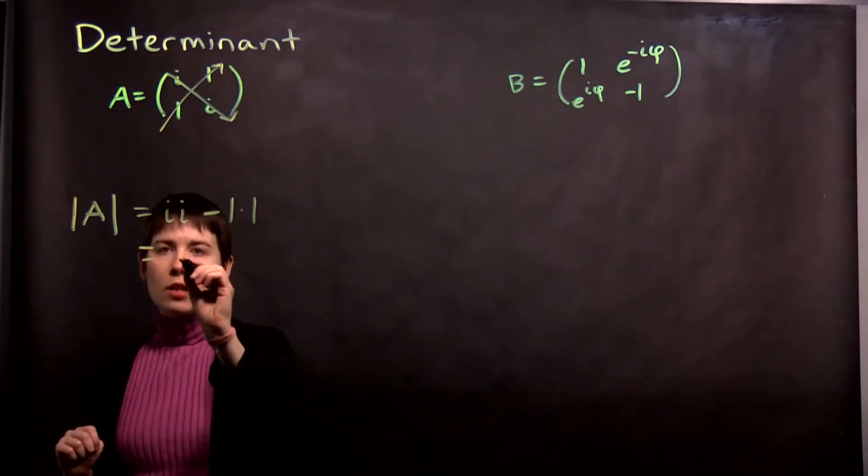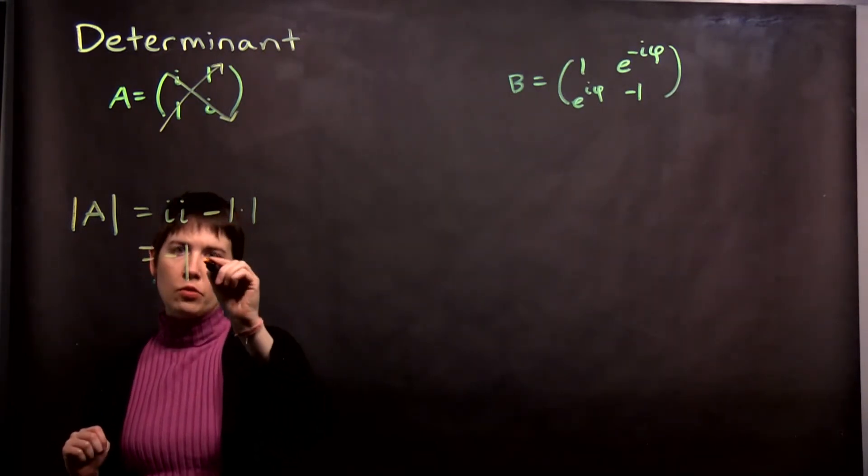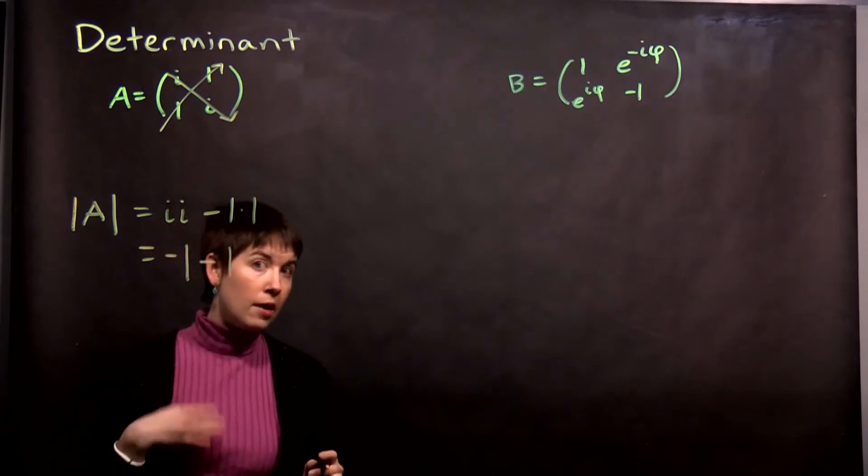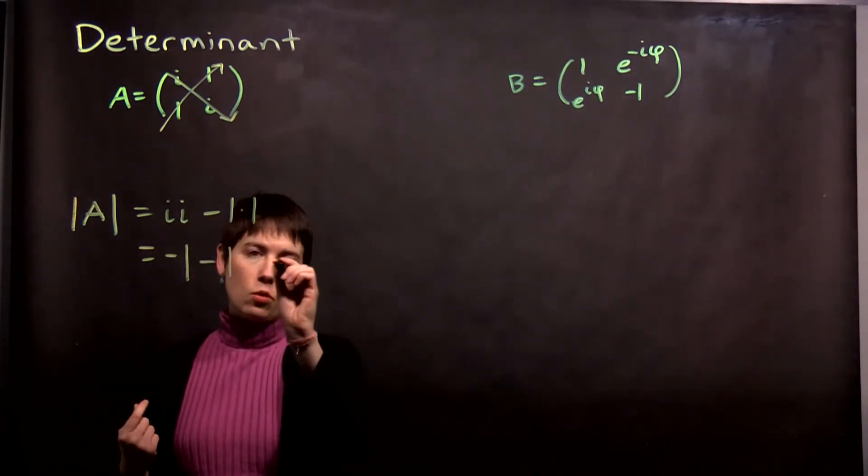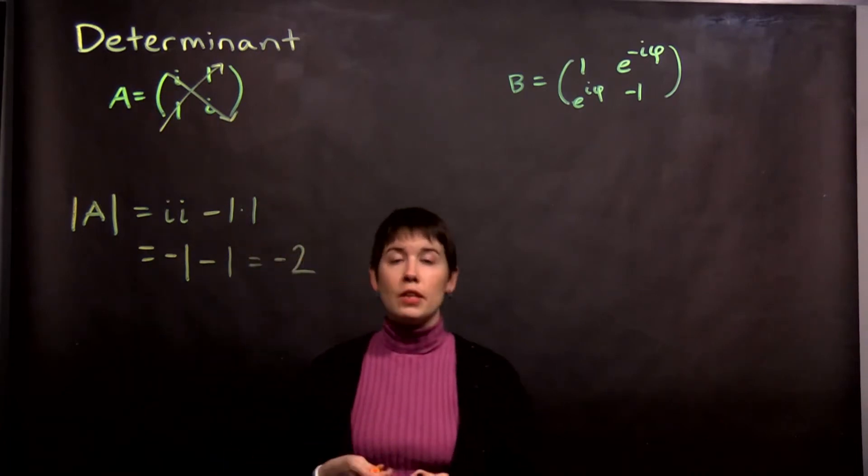So i times i is negative 1, and then I have minus 1 times 1, so it's minus 1. Negative 1 minus negative 1 equals negative 2. The determinant of this matrix is negative 2.